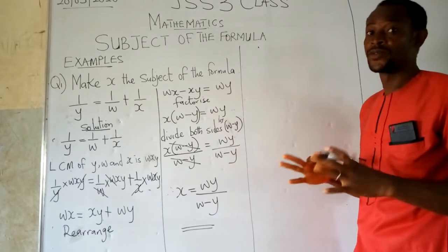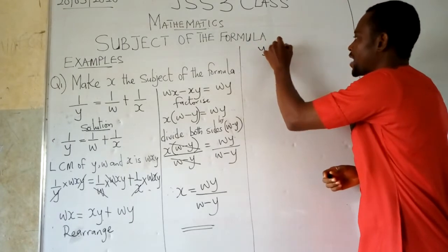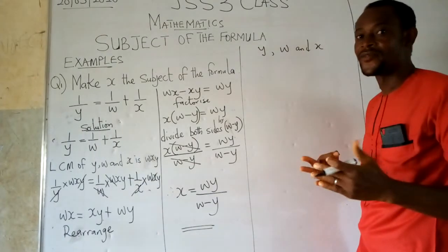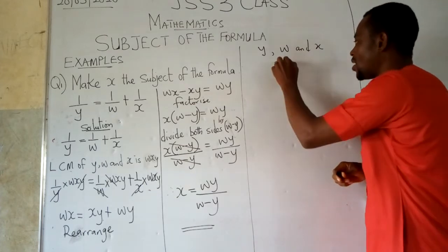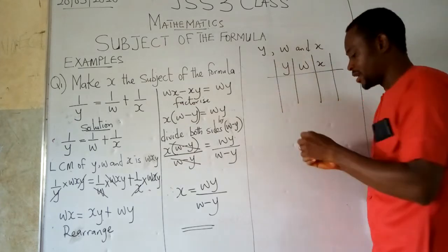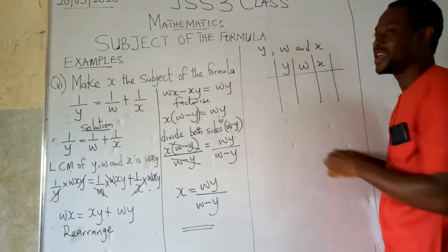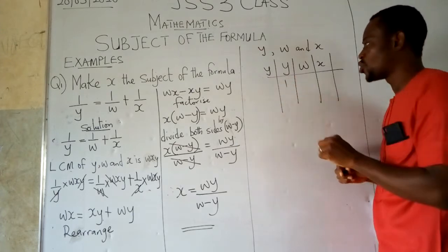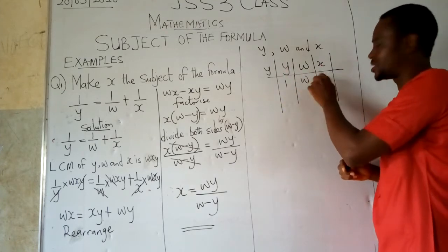For this context, we have y, we have w, and we have x. We are trying to derive the LCM. We can use the division method here. Y, w, x. Then if you look at this line, what do we use now? What can divide anything here? We can use y now. Y can divide y to give us one. Y cannot go into w, we will bring it down. Are you following? Y cannot go into x, we will bring it down.